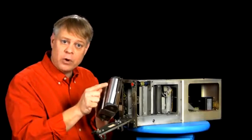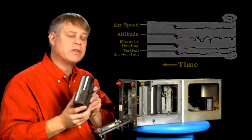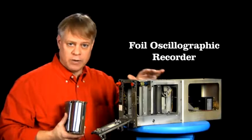This metallic foil records flight parameters. They're engraved or scratched onto the Inconel sheet. In fact, the real name for this device is a foil oscillographic recorder.